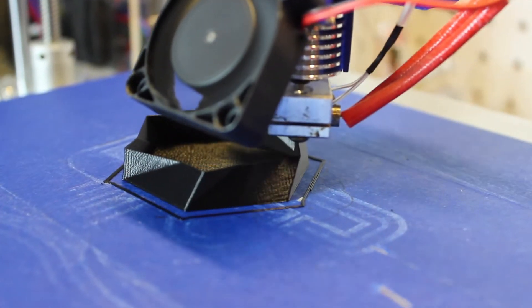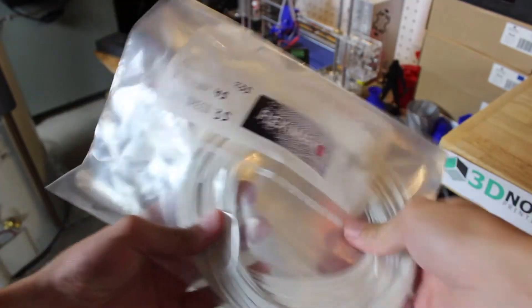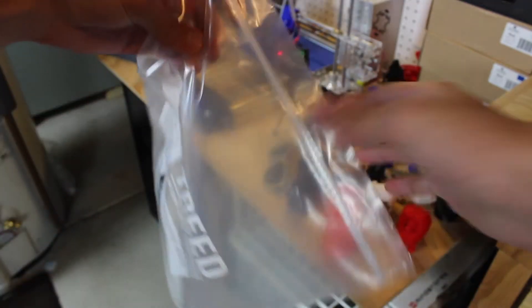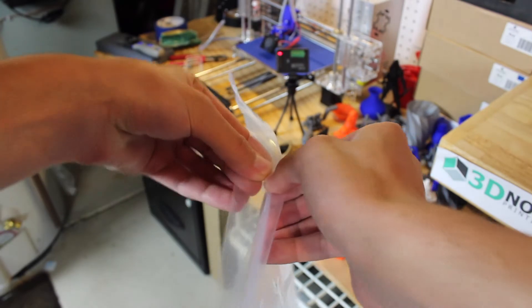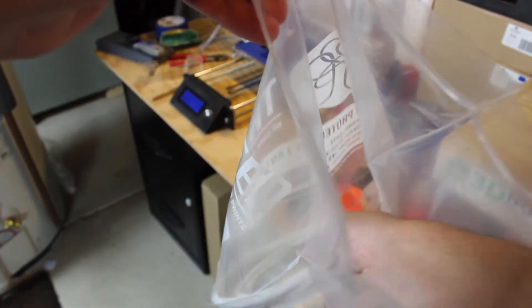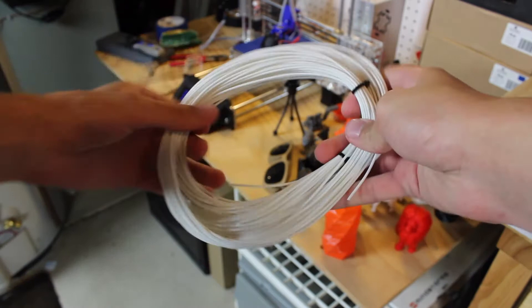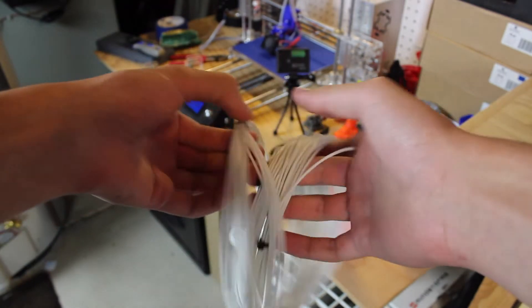So moving on to the Flex Mark 9. They make Flex Mark 7, 8, and 9 depending on how much you want your filament to flex. Flex Mark 9 is the most stiff filament but it's still pretty stretchy and I will compare it to Ninja Flex Cheetah filament. It's kind of the same stiffness.